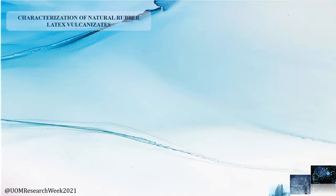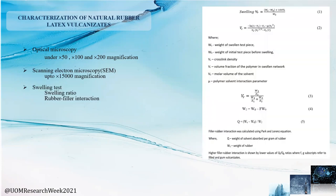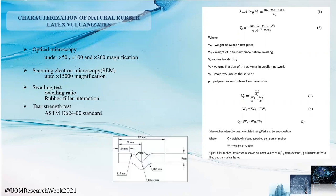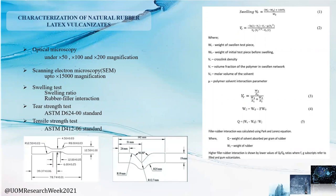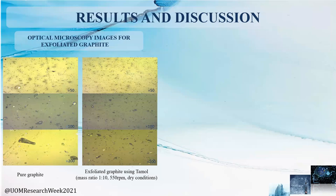Several characterization techniques were used to characterize the natural rubber latex vulcanizates. First was optical microscopy, then scanning electron microscopy. The swelling test, a conventional testing method used in rubber-related processes, was also done. Using this method, we can calculate the swelling ratio and rubber-filler interaction, indicate the cross-linking density of rubber vulcanizates, as well as the interaction between rubber and the fillers added. Next, the tear strength test was done under ASTM D624 standard, and the tensile strength test was conducted under ASTM D412-06 standard.